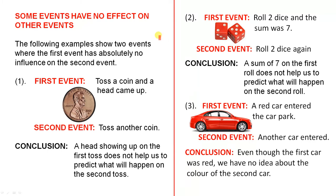Now, some events have no effect on other events. In other words, if you have a first event, it does not influence the second event. The following examples show two events where the first event has absolutely no influence on the second event. The first event: you toss a coin and a head came up. The second event: you toss another coin. A head showing up on the first toss does not help us to predict what will happen on the second toss. Tossing a head has no influence on what will happen when you toss another coin.